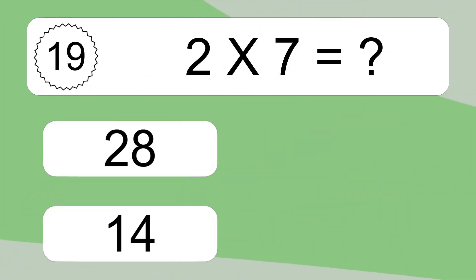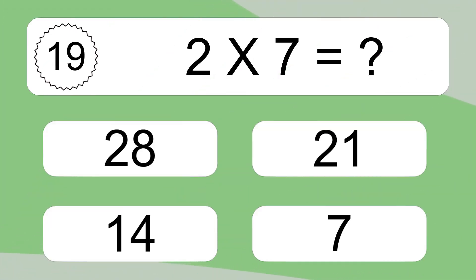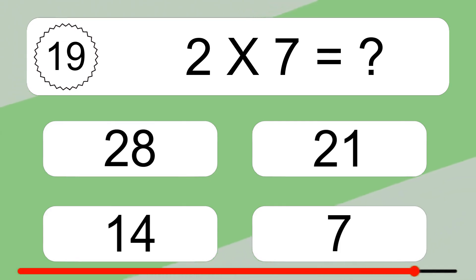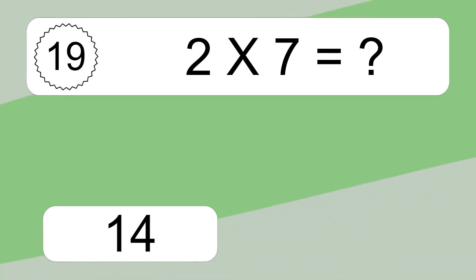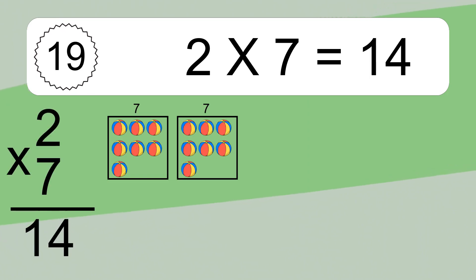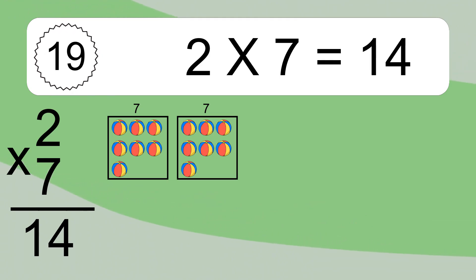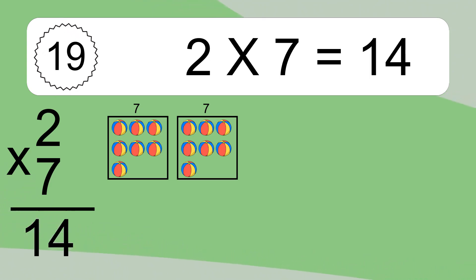2 times 7 equals what? 2 times 7 equals 14. We have 2 boxes, and each box has 7 colorful balls inside. If you count all the balls in all the boxes together, you will have 2 times 7 balls. This equals 14 balls.